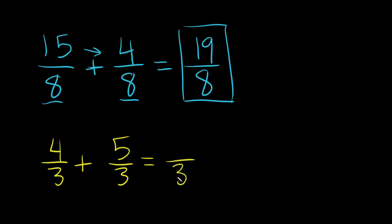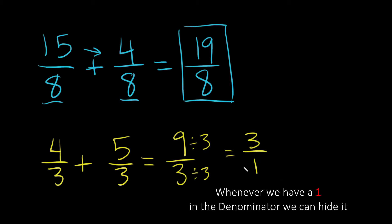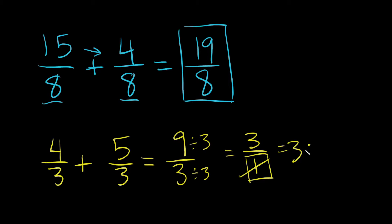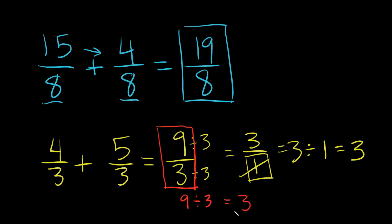So we'll put that there. 4 plus 5 is 9. Can we reduce this? Yes, because the top and bottom are both divisible by 3. We can divide by 3 here and divide by 3 here, and this reduces to 3 over 1. Can we reduce this anymore? Sure. Whenever we have a 1 in the denominator, we can just simplify it, because this is the same as 3 divided by 1, and 3 divided by 1 is just 3. So 4 thirds plus 5 thirds is equal to 3.